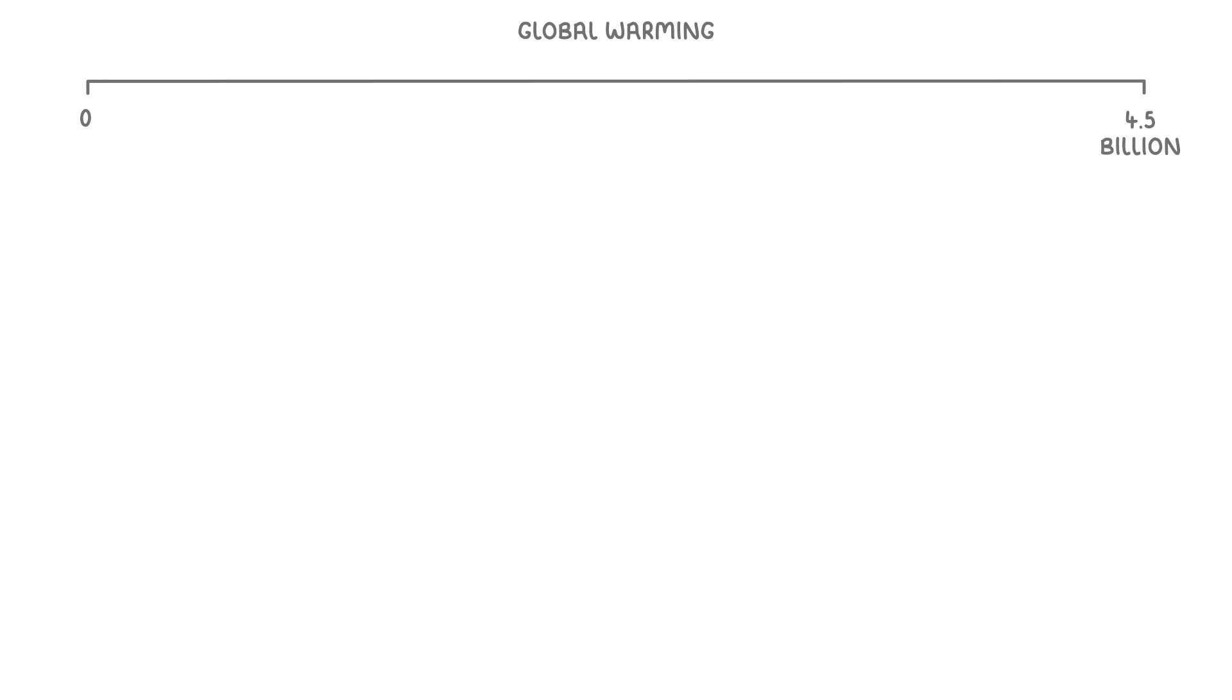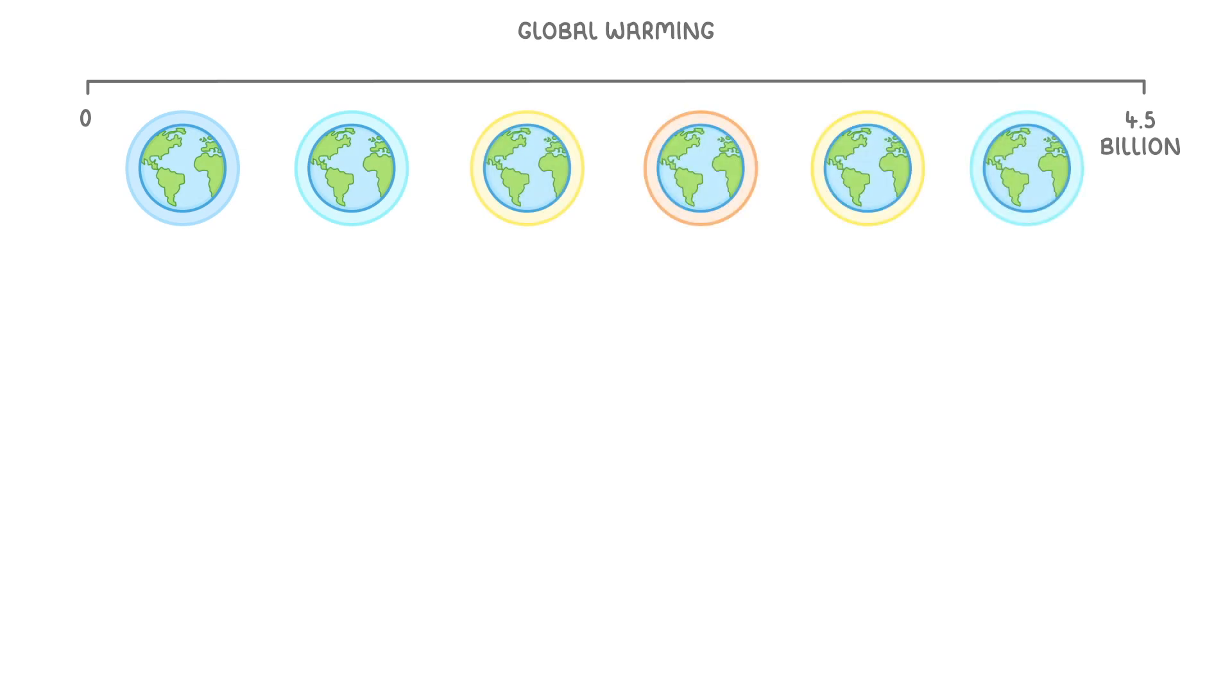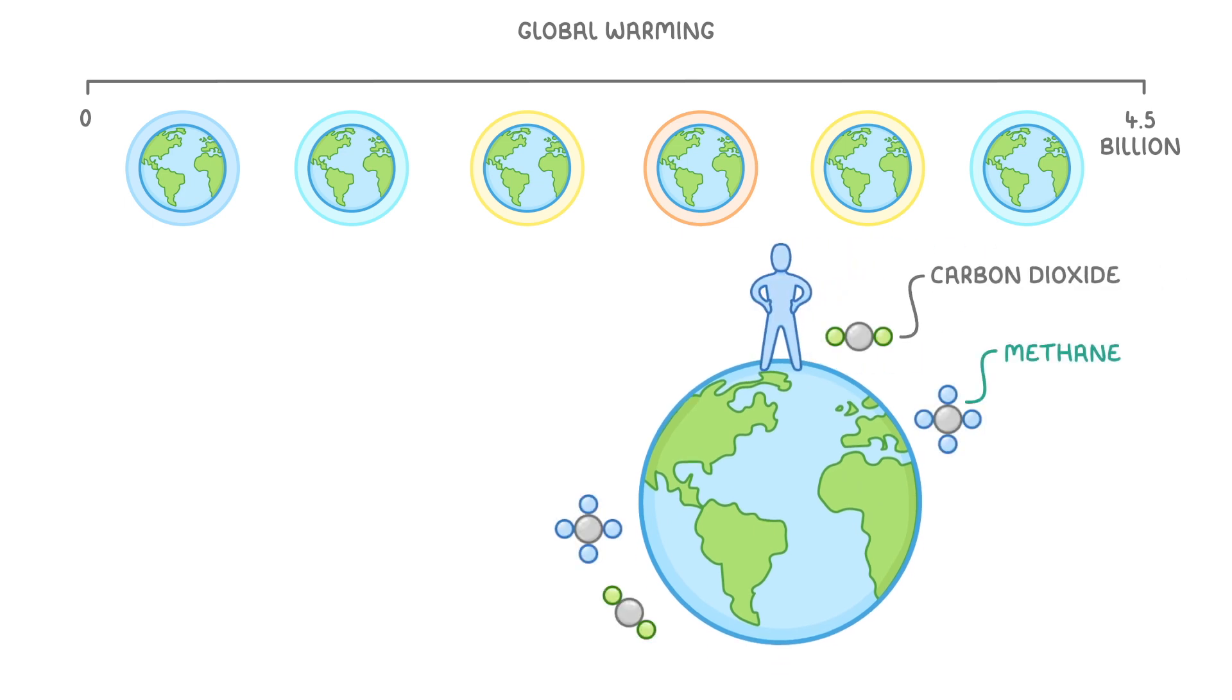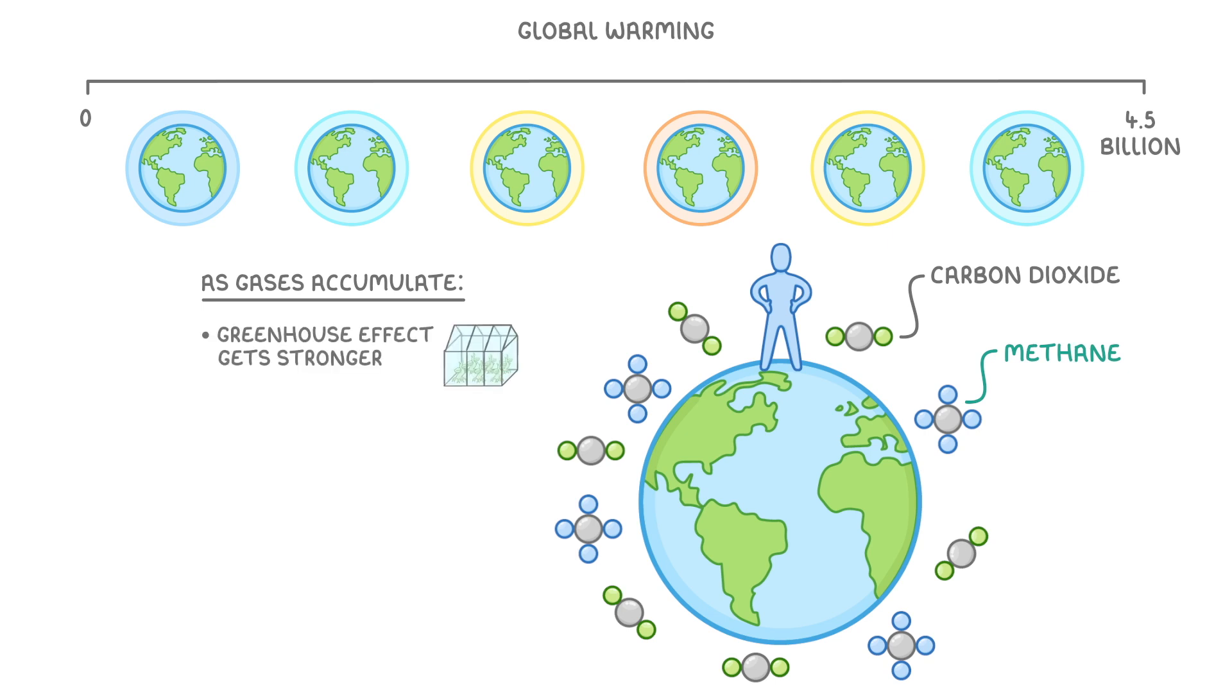In the 4.5 billion years that the earth has been around, the strength of this greenhouse effect has grown and shrunk over and over. And this is happening again right now, mostly due to humans releasing loads of carbon dioxide and methane into the atmosphere. The problem is that as these gases accumulate, and the greenhouse effect gets stronger, the earth warms up, which we call global warming.